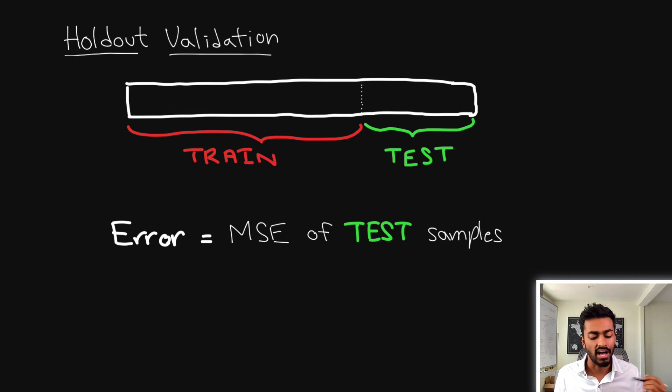Now one type of validation technique is the holdout validation technique where here's our block of data which we split into a train set and a test set. The train set is used to train the model and the test set is used to evaluate it. And in this case we compute the holdout validation by taking the mean squared error of all of these test examples.